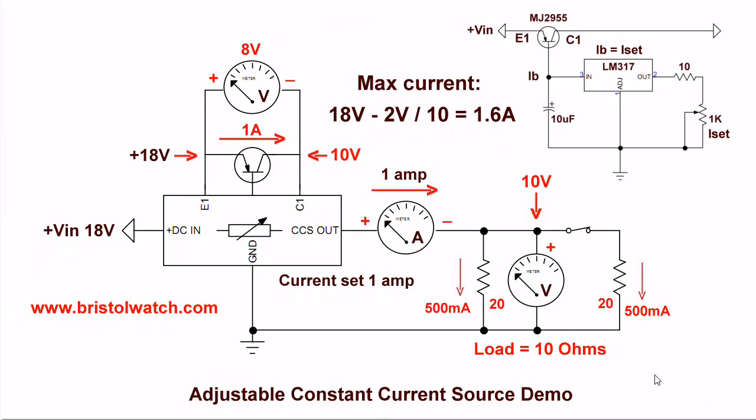Here is my circuit again, but this time I have used two 20 ohm resistors in parallel. I still have 1 amp coming out of the constant current source. 20 ohms in parallel with 20 ohms is a load of 10 ohms, and again the current will divide 500 milliamps per branch, and I'll have 10 volts.